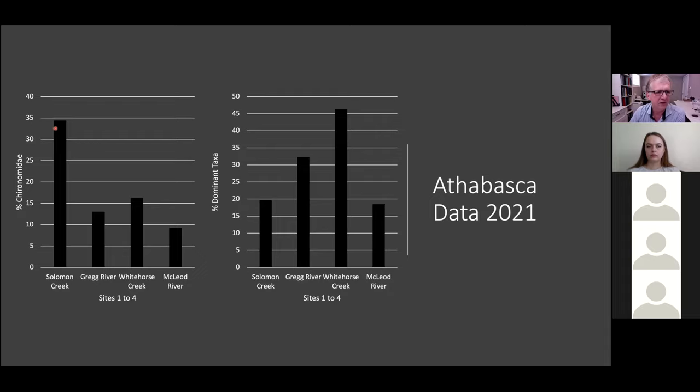Percent chironomids. Suddenly, Solomon Creek is an absolute dog. It's far and away the worst for percent chironomids. Whitehorse Creek is way down there. This is one you don't want to win. The Greg River, third. And McLeod River didn't have much fauna in number of specimens, but of those specimens collected, there were very few chironomids. So for goodness for this metric, you'd say McLeod River is first, Greg River is second, Whitehorse is third, and Solomon Creek hasn't even started the race yet.